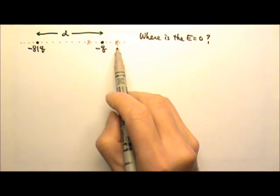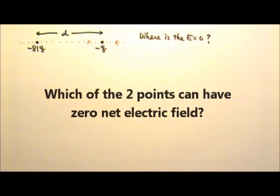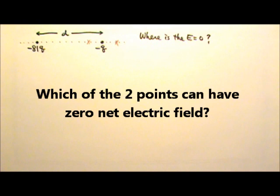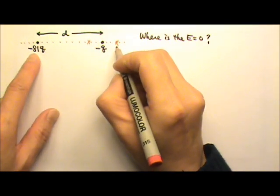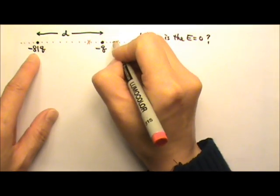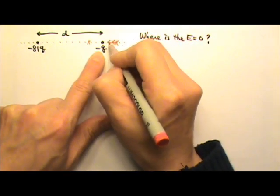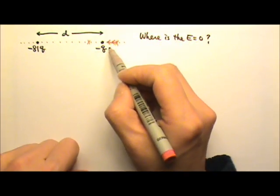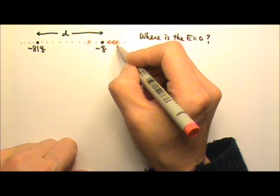Now which point will work for this problem? The field produced by each negative charge goes into the negative charge — meaning those two fields are going to be in the same direction on the right side outside, so they can never cancel. So that location does not work.